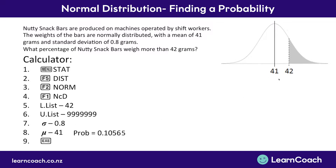But we're not quite done — the question asks specifically for a percentage, not just the probability. So if you ever need to change to a percentage, you multiply by 100. Multiplying this by 100 gives us a 10.564% chance that a nutty snack bar will weigh more than 42 grams.